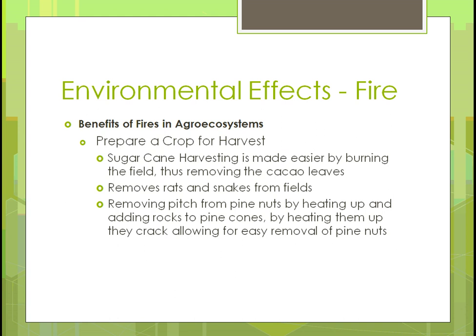Preparing a crop for harvest: sugar cane harvesting involves cocoa leaves, and by burning them off, it makes it easier to harvest the sugar cane with large knives — you don't have to cut through the cocoa leaves to get to the cane. Another benefit is that fire removes rats and snakes from the fields before harvest.